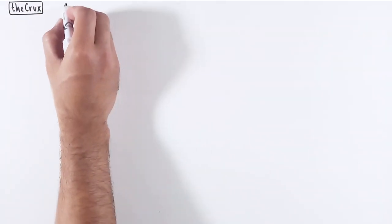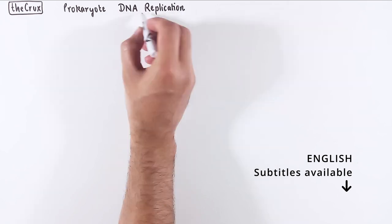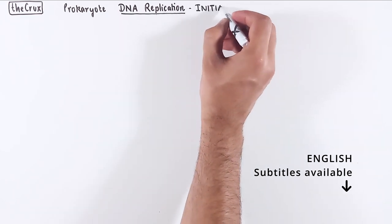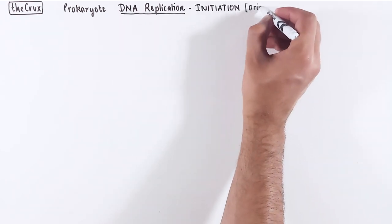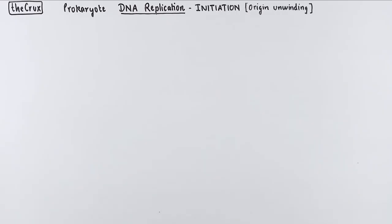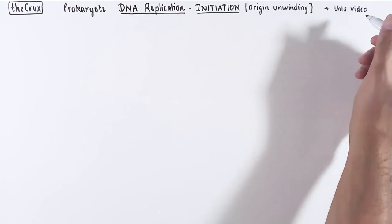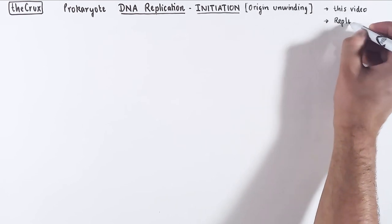In this video, we will start talking about prokaryotic DNA replication, and we start with the initiation step. We will focus on the origin unwinding stage of the initiation. This is also referred to as DNA melting. I will split the initiation stage into two parts. The first part is the origin unwinding, which is this video.